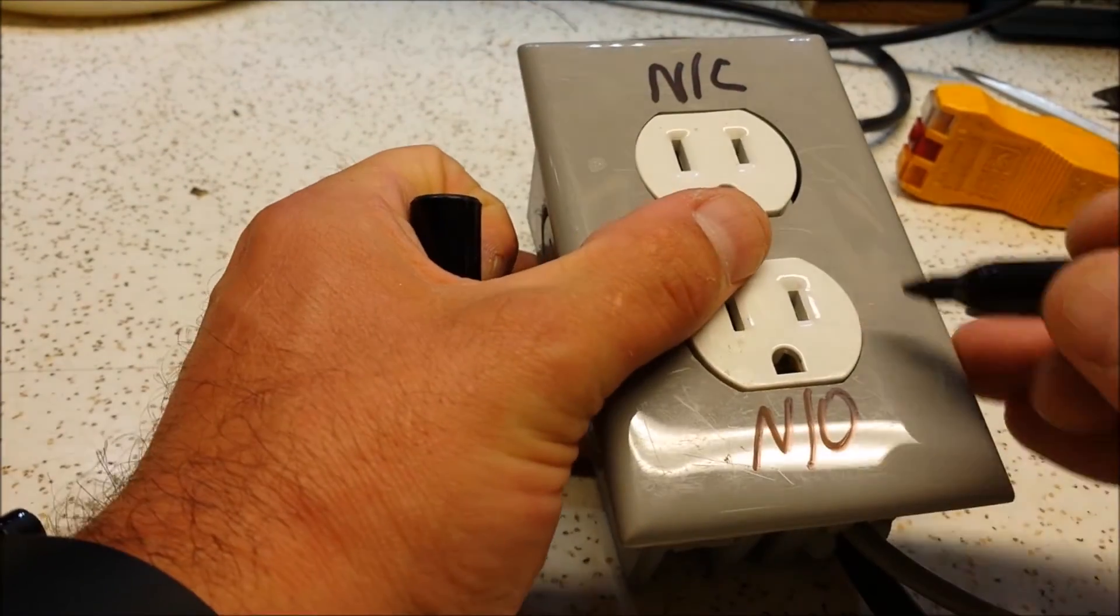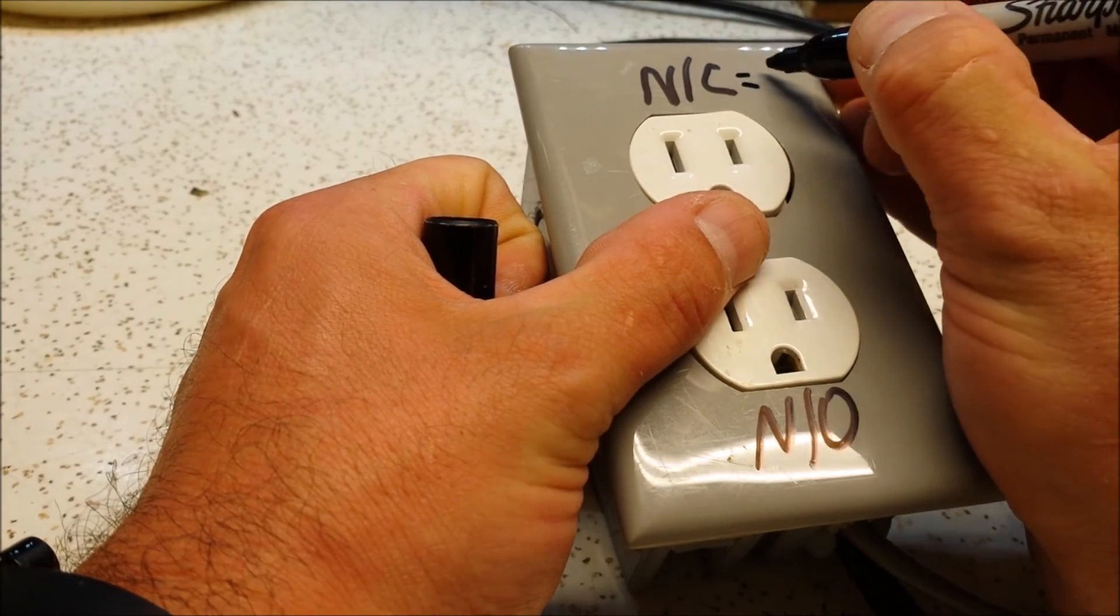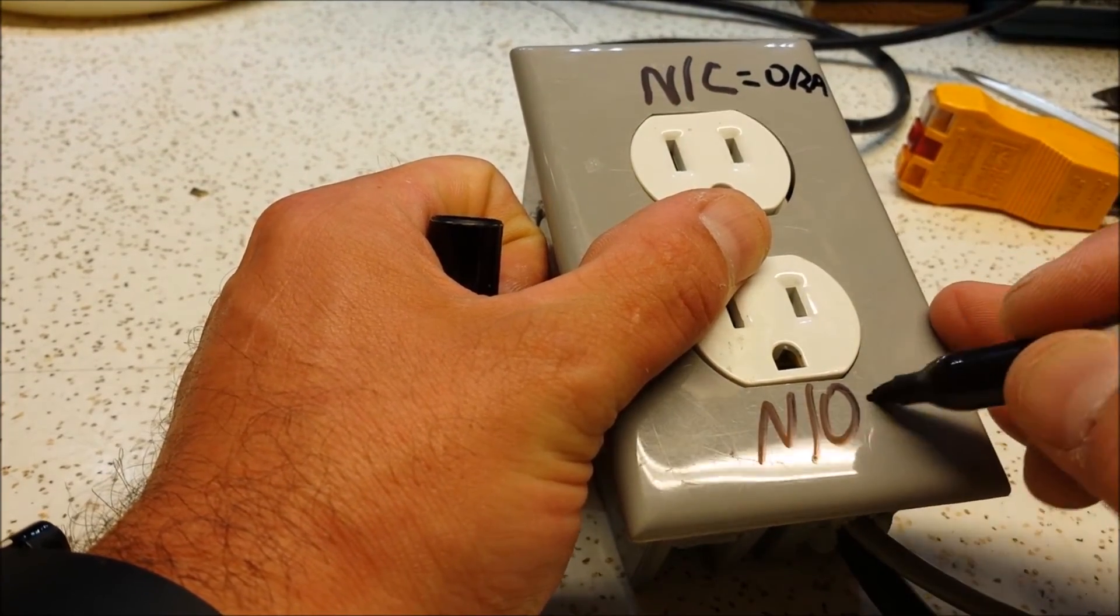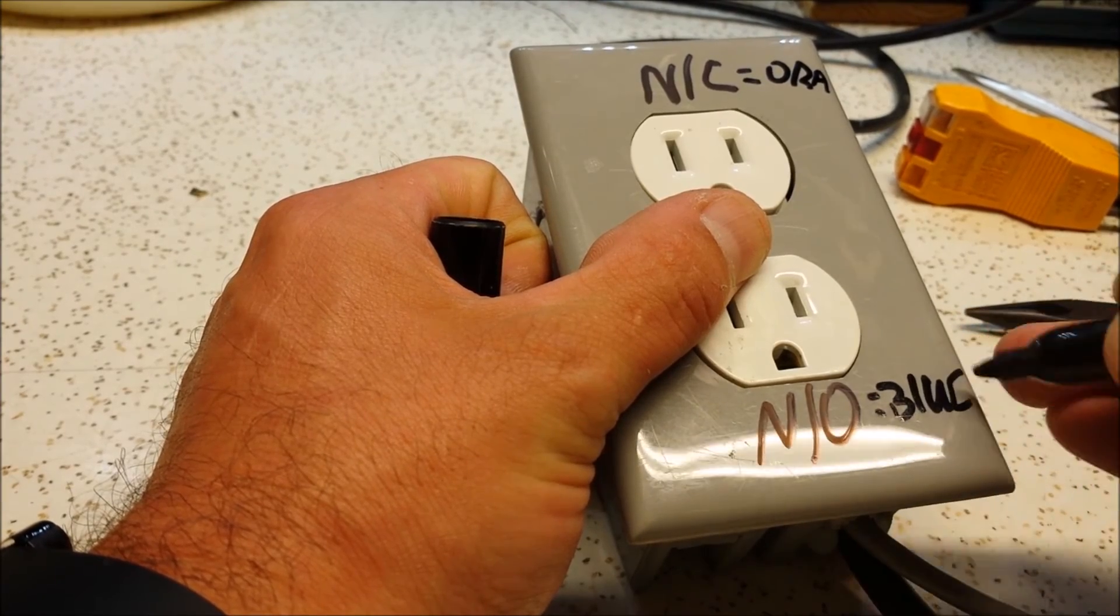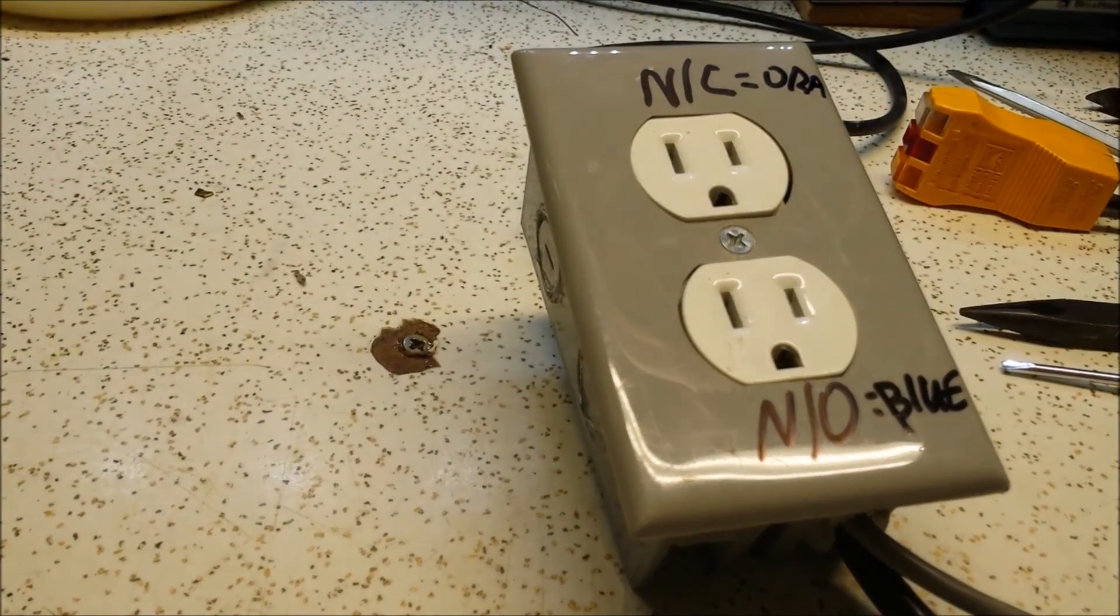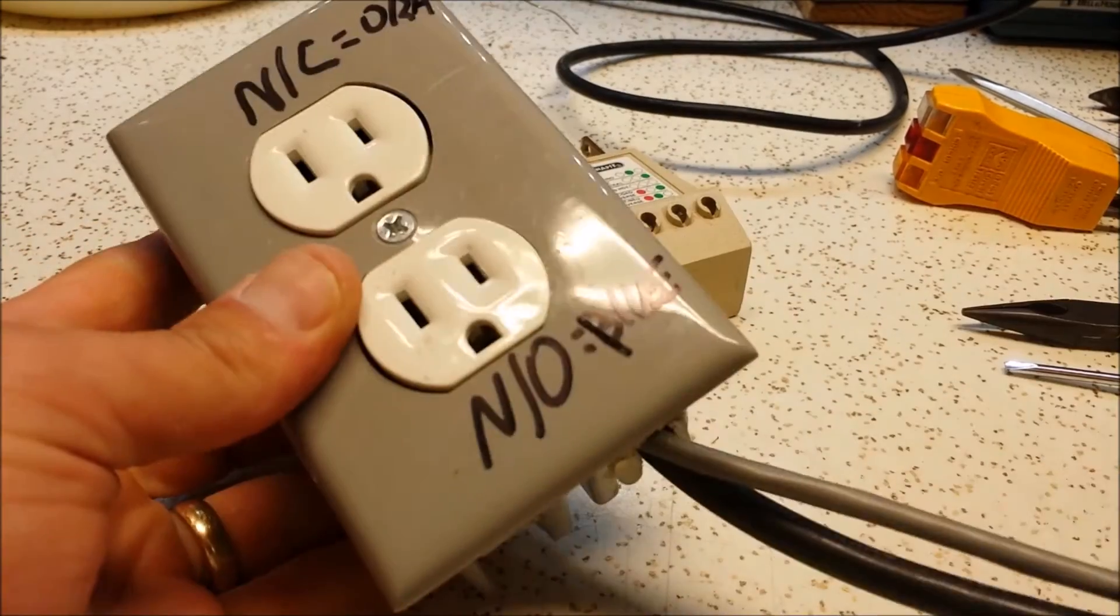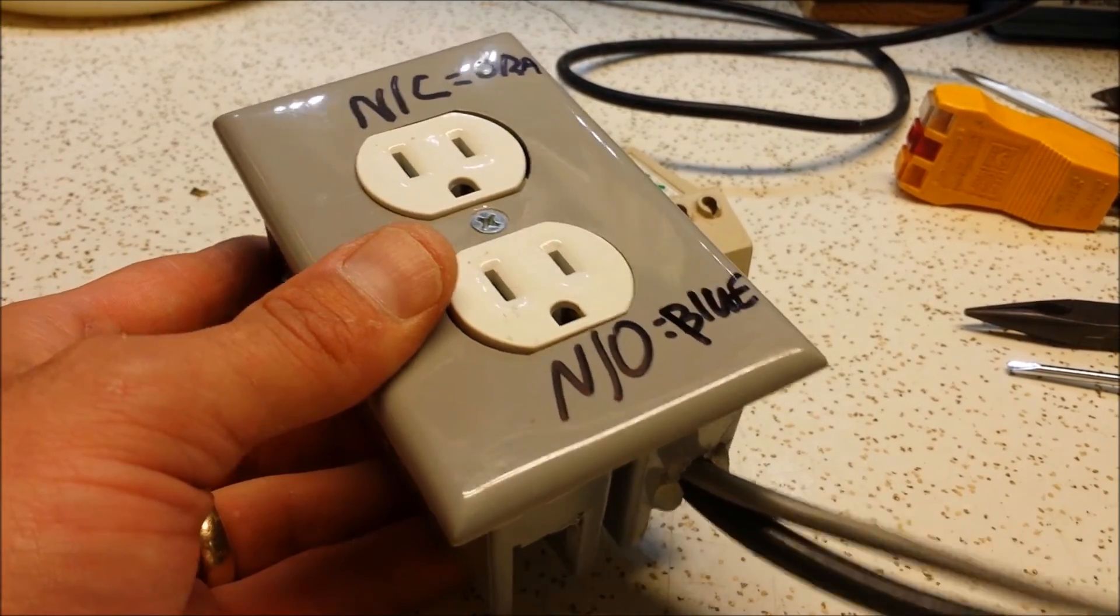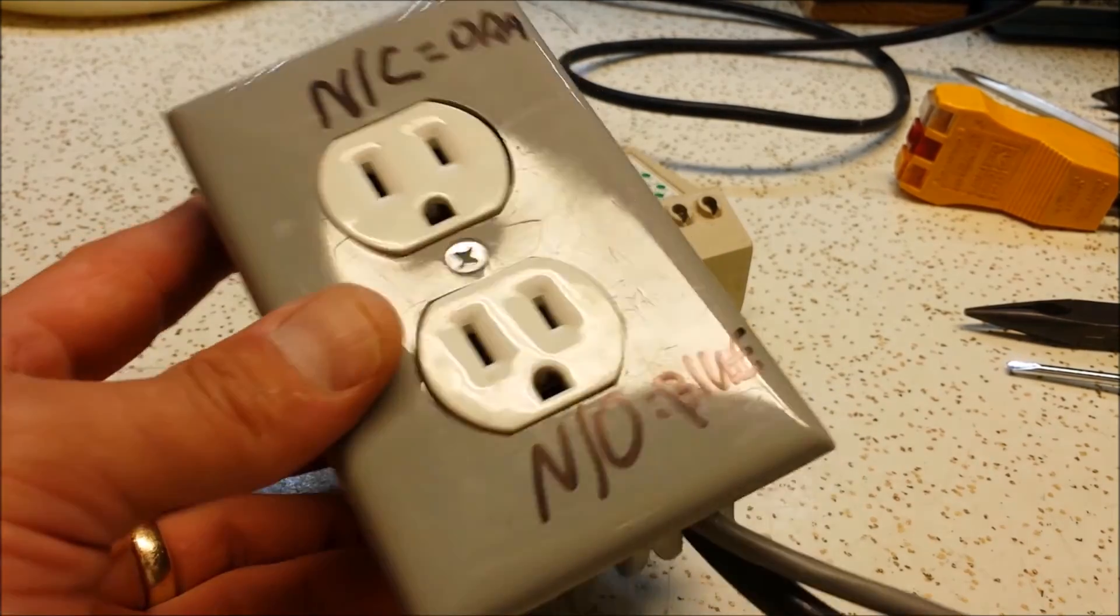So I'm just going to make a note of this one is orange and then this one is blue. That way I remember. So that's it, so there you have it. That is your very own super inexpensive DIY power switch tail.